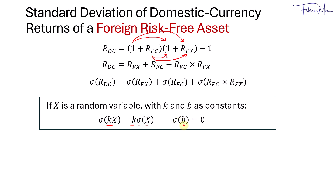And the standard deviation of a constant equals 0. Linking this to a foreign risk-free asset where the return is constant, the standard deviation of a risk-free asset is 0. So applying this, the first term becomes 0. For the third term, R_FC is analogous to k — a constant — so it acts as a coefficient.